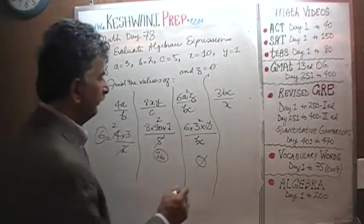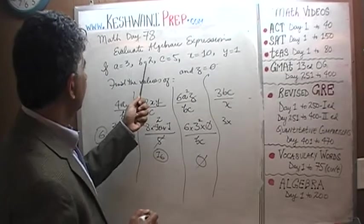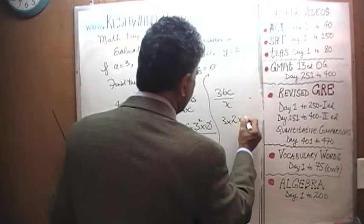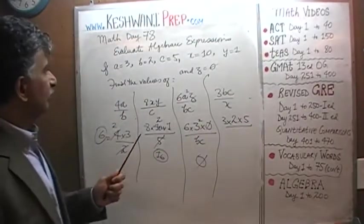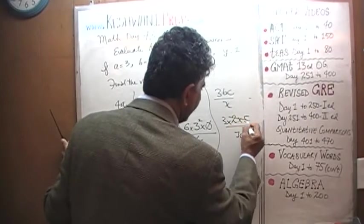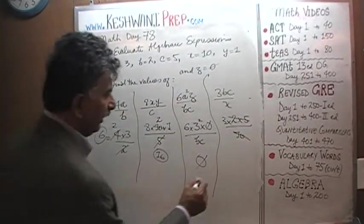Let's do the last one. 3 times B which is 2 times C which is 5 over X which is 10. And 2 times 5 is 10. 10 is going to cancel out that 10, and the answer is just 3.